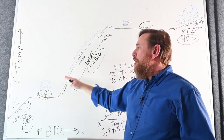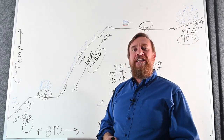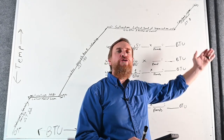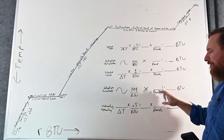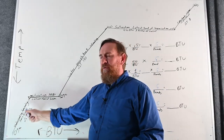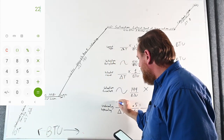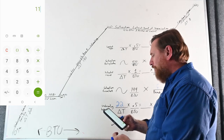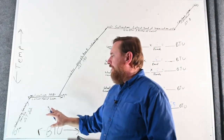The other way is to do it for every individual step, working with the actual number of pounds throughout. We'll run through it with five pounds. Starting with the sensible heat of ice: 32 minus 10 gives a delta T of 22°F. Then 22 times 0.5 (the specific heat of ice) equals 11 BTUs for one pound, times five pounds equals 55 BTUs for five pounds of ice.